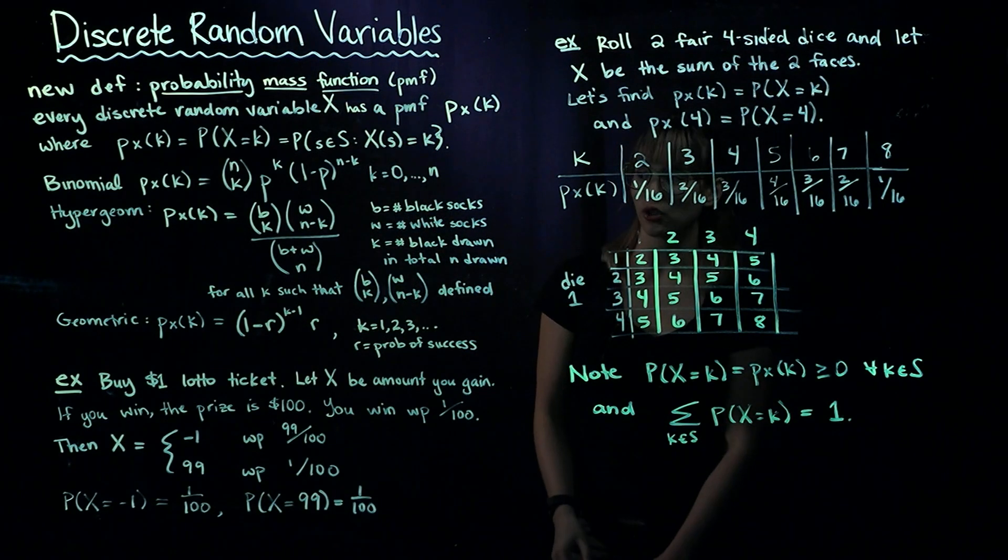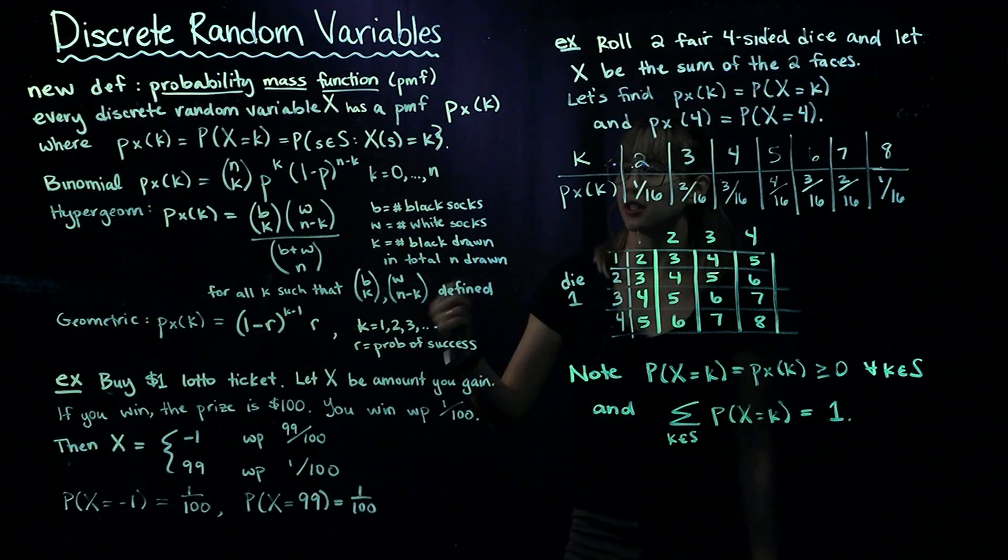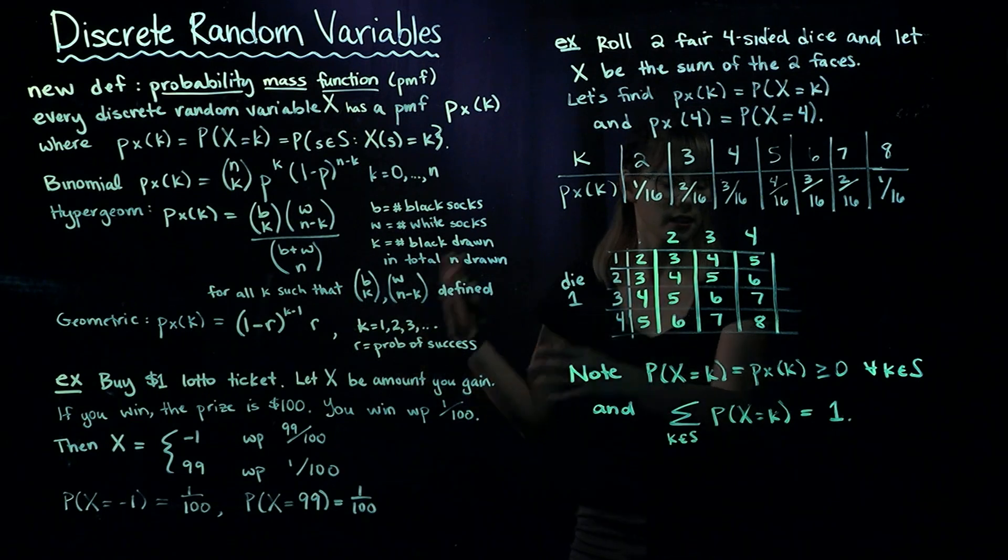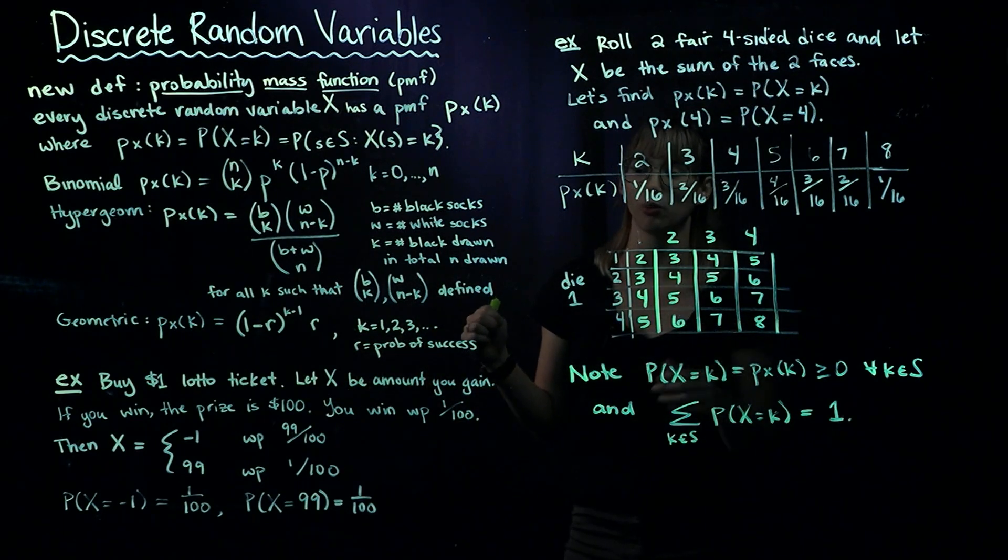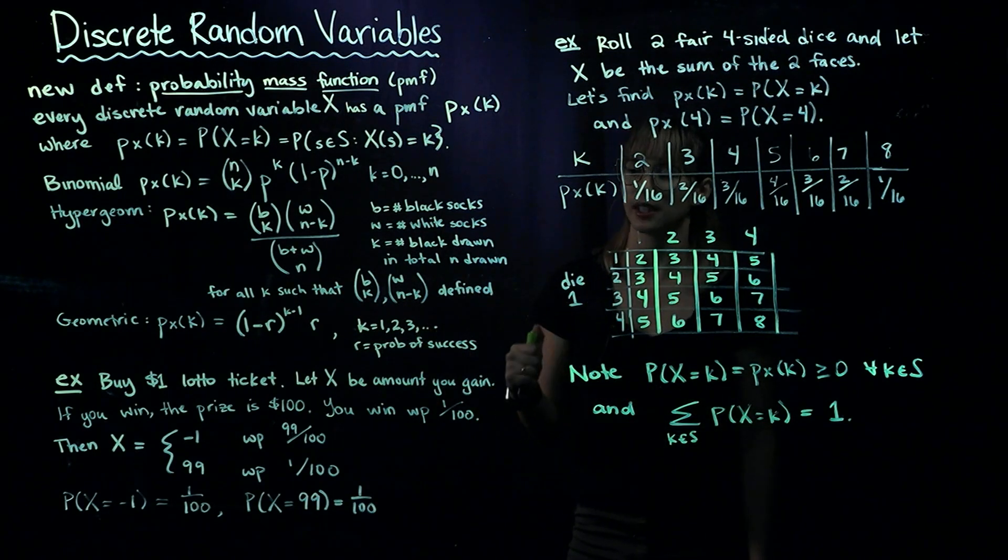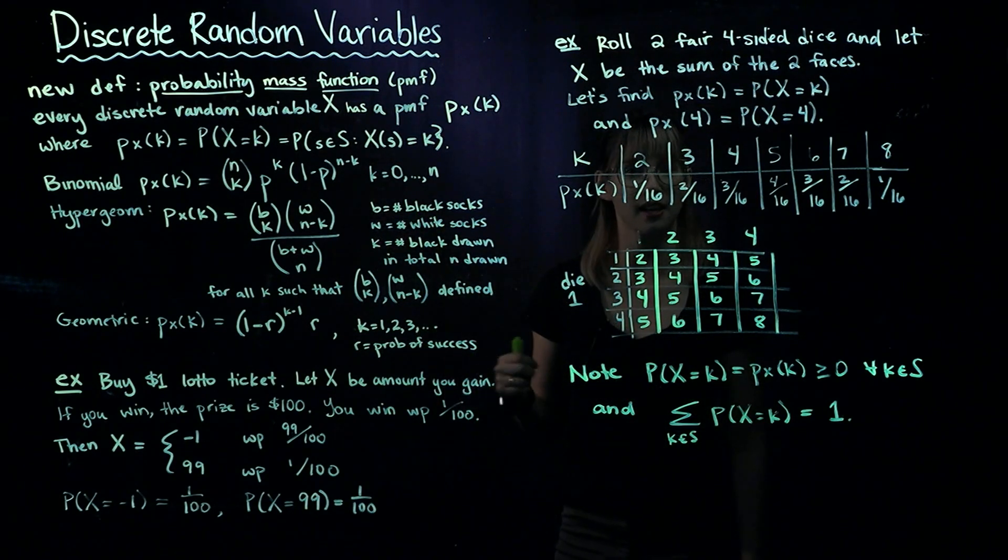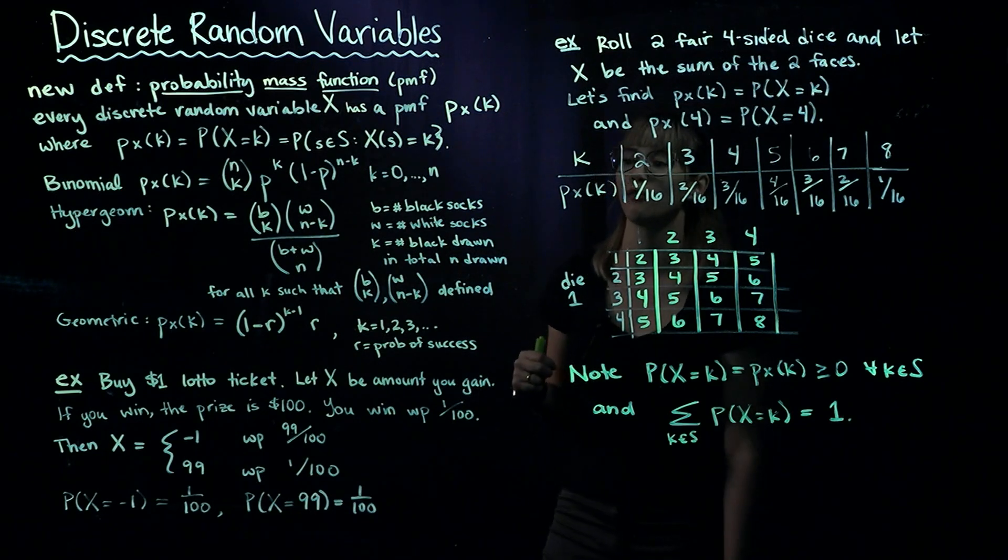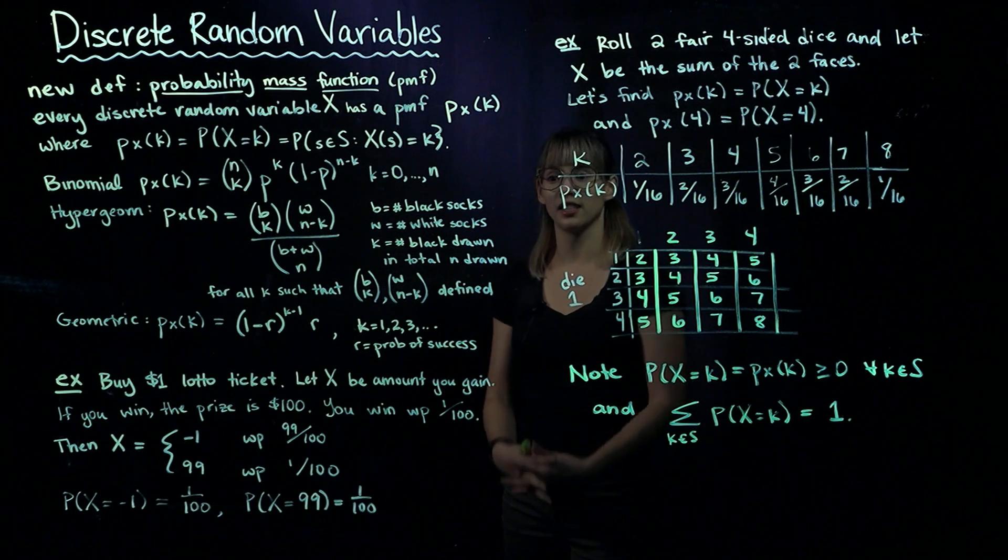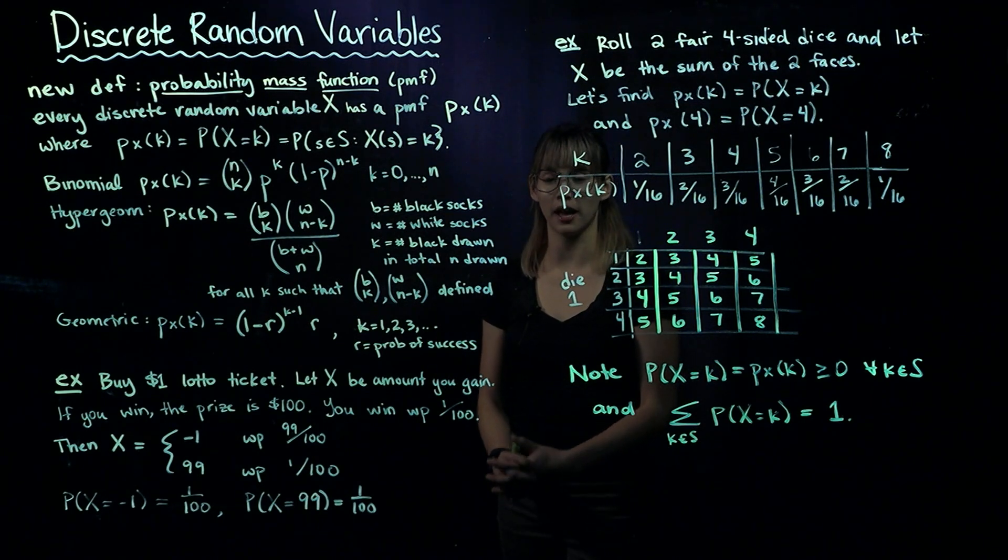Next is the hypergeometric distribution. Consider a drawer with black and white socks mixed together, drawing them without looking, perhaps in a dark room. In total, we have B plus W socks, where B is the number of black socks and W is white socks. We draw N socks total.